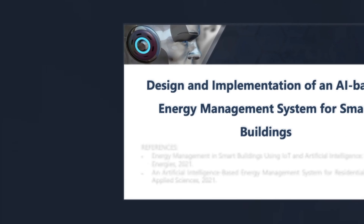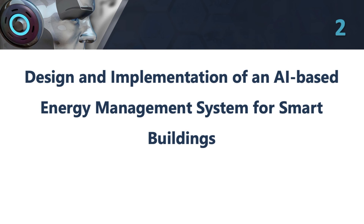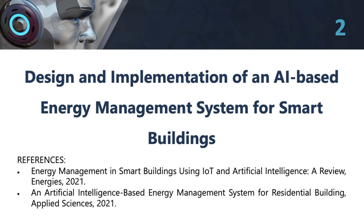2. Design and Implementation of an AI-Based Energy Management System for Smart Buildings. This topic involves designing an AI-based energy management system that can optimize energy consumption in smart buildings. The system could use machine learning algorithms to learn from data collected by sensors and control devices to adjust energy consumption based on occupancy, weather, and other factors. The project could involve designing and implementing a prototype system using off-the-shelf hardware and software tools.